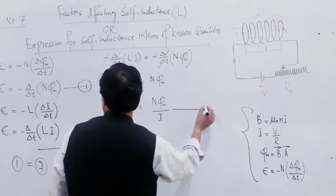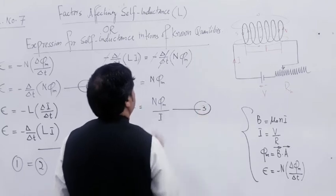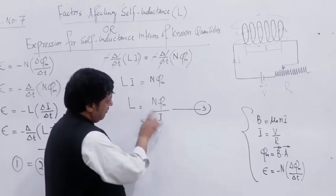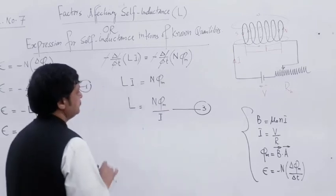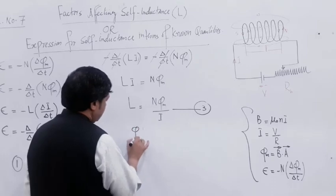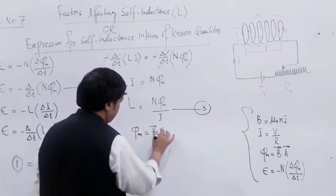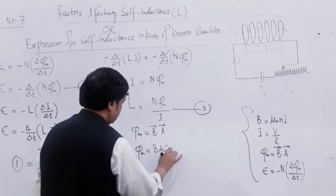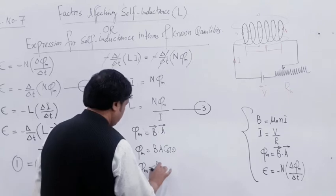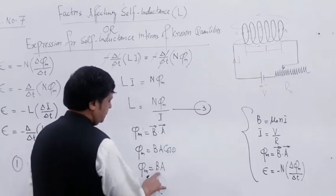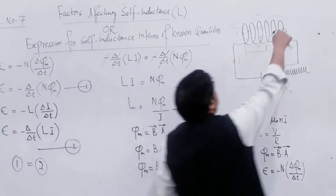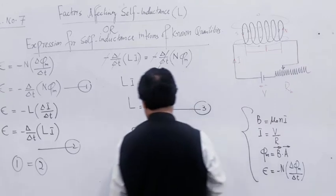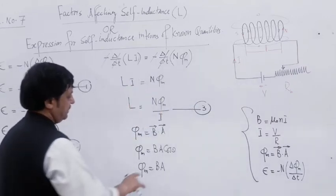Now we need to eliminate I from the expression. The magnetic flux phi-M can be written as B dot A, that is, magnetic flux equals B·A·cos(theta). If we consider theta equal to zero, then cos(0) is 1, so phi-M equals B·A. This is valid when the loop normal is parallel to the magnetic field, so the angle is taken to be zero. Therefore we get L = N·B·A divided by I — this is equation 5.